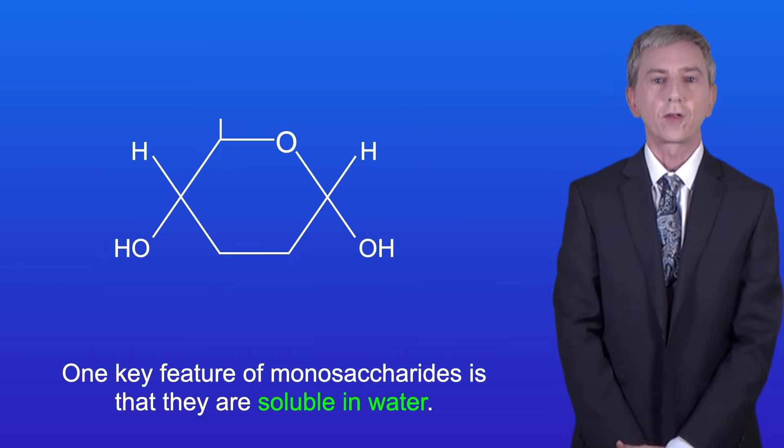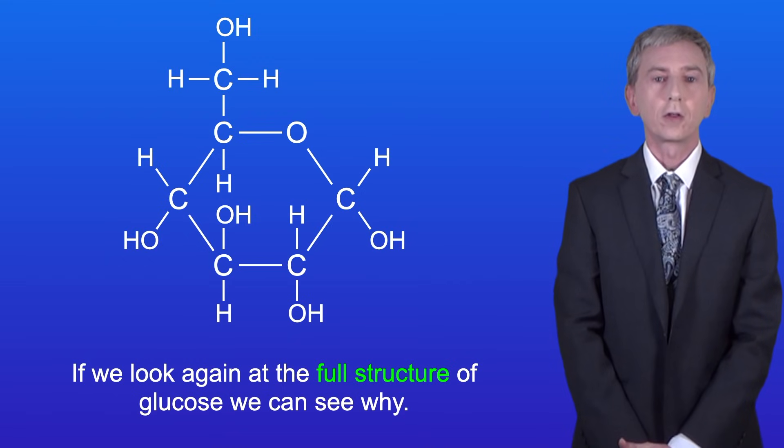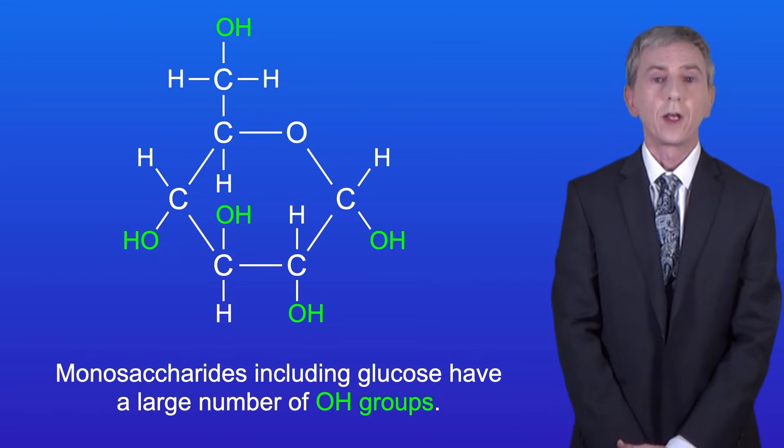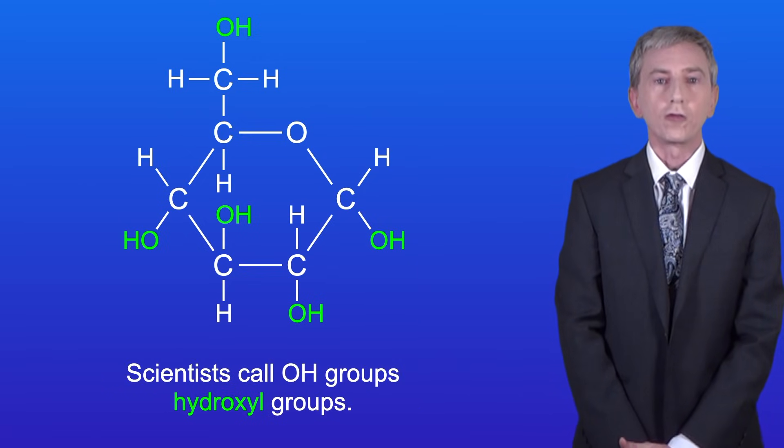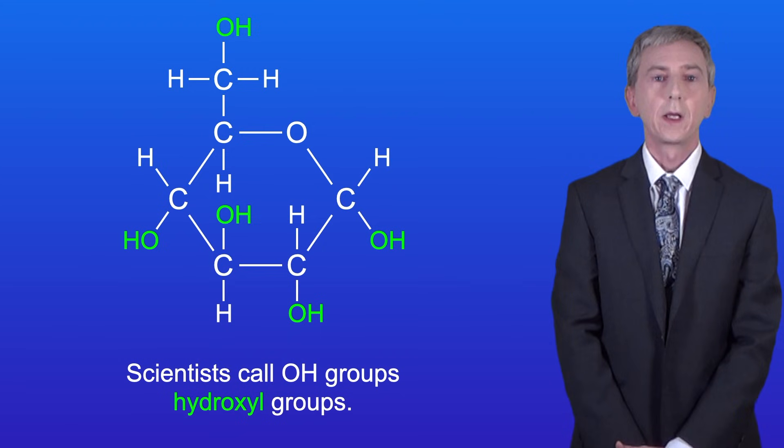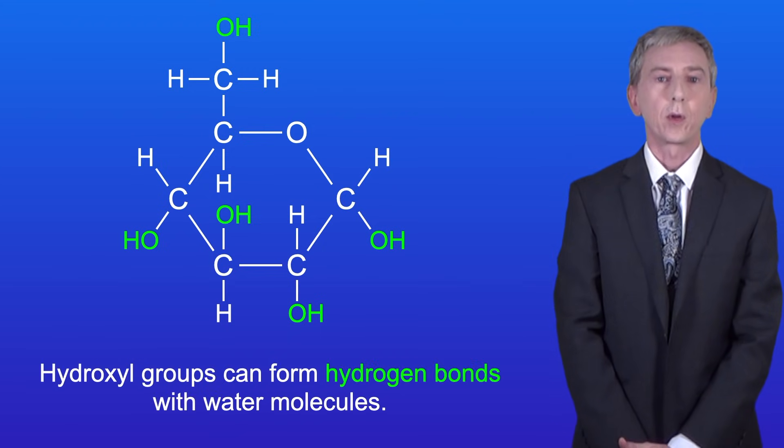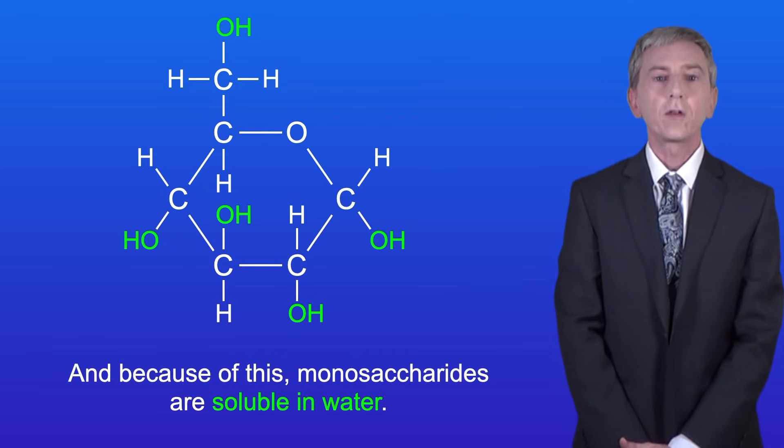Okay now one key feature of monosaccharides is that they're soluble in water and if we look again at the full structure of glucose we can see why. Monosaccharides, including glucose, have a large number of OH groups. Scientists call OH groups hydroxyl groups. Hydroxyl groups can form hydrogen bonds with water molecules and because of this monosaccharides are soluble in water.